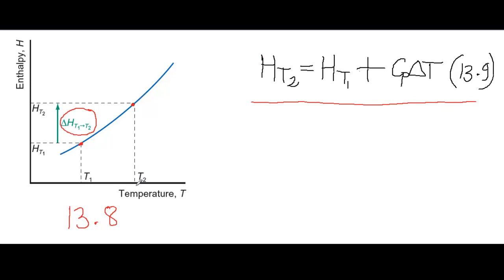Well, enthalpy change is the heat transferred at constant pressure, and we can give that quantity the symbol QP, where Q is the amount of heat transferred and P says that it's at constant pressure.